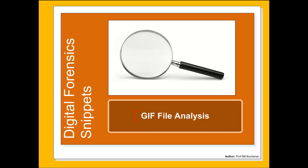Let's have a look at the GIF format. GIF is obviously used for image files and is still extensively used in many applications. It is especially useful in terms of compressing graphics which have a limited colour set and can be highly efficient in its compression. Unfortunately it only gives 256 colours but each of these colours can be defined in 24-bit pixel blocks.